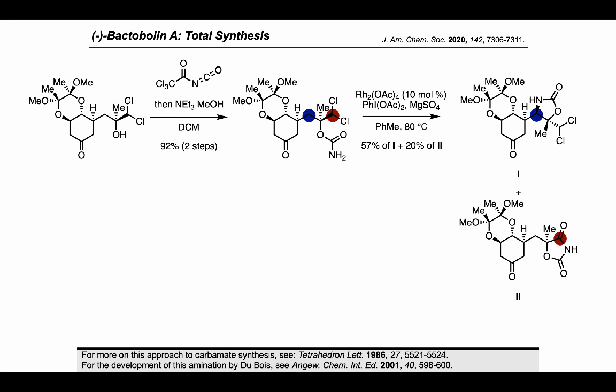They demonstrated that both the stereogenic triad on the western half of the molecule, as well as the carbamate-bearing stereocenter, were necessary in order to achieve a highly diastereoselective C–H amination by matching the stereocontrol elements of the substrate. A byproduct, labeled as 2, did form, however, by reaction on the dichloromethyl site through a mechanism that's not exactly clear.